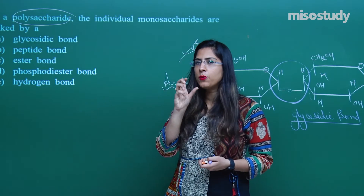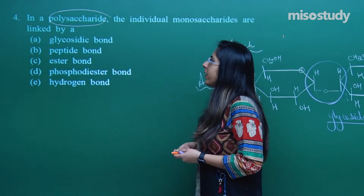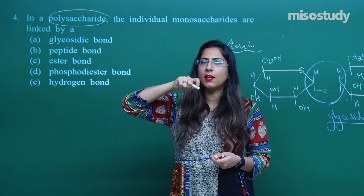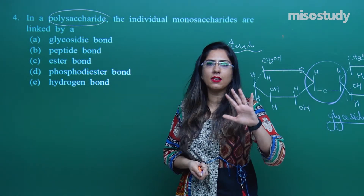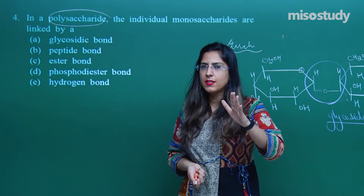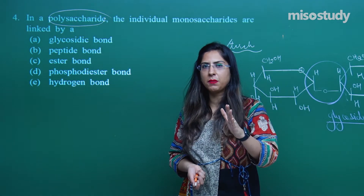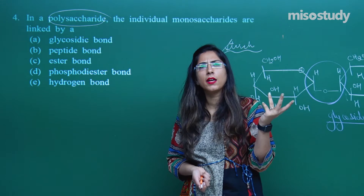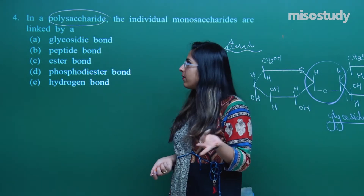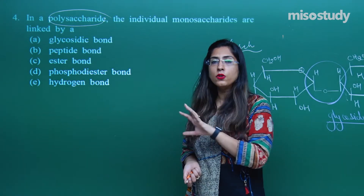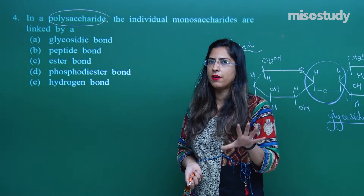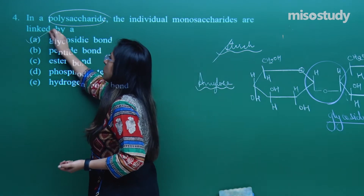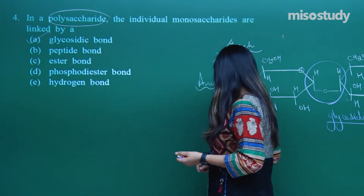A possibly confusing point: they have written polysaccharide, but we also studied disaccharides. When discussing monosaccharides I didn't mention the glycosidic bond; I introduced it with disaccharides. Similarly, polysaccharides also have glycosidic bonds. This might be confusing, but just focus on the concept — one unit attaches to another. The correct option is A: glycosidic bond, for question number 4.